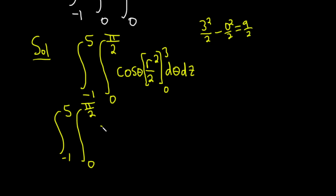So I'm going to go ahead and put that 9 over 2 here, put the cosine theta here, and then the d theta, and then the dz.